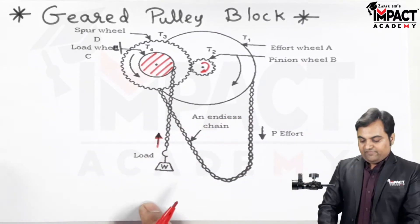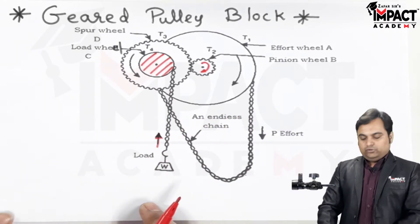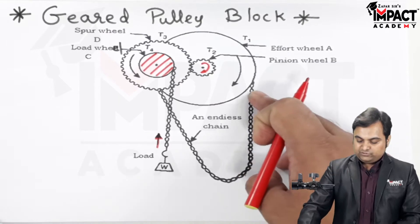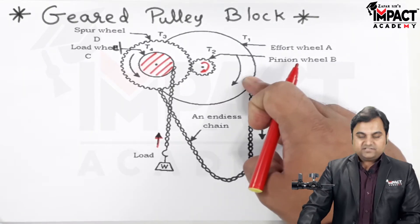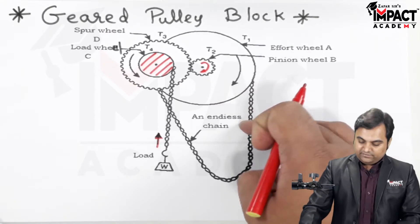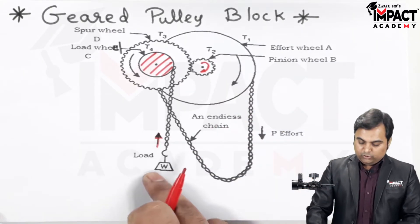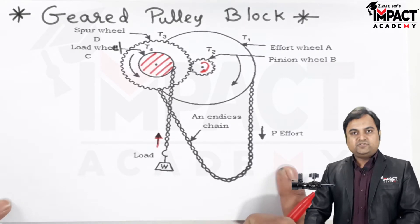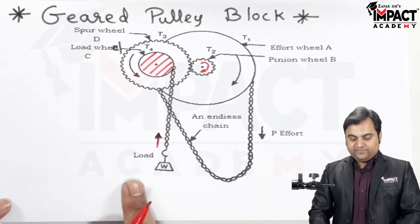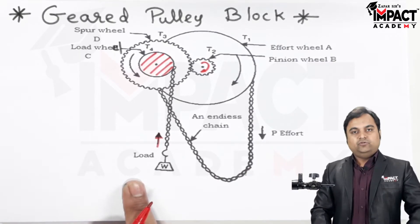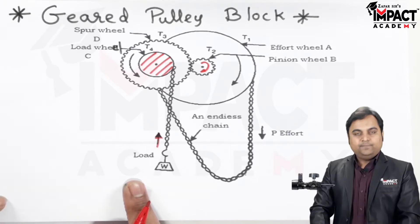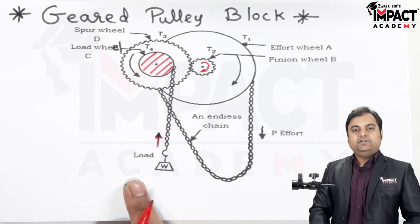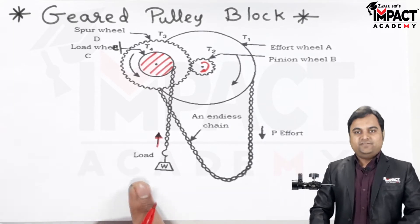If we want to lower the load, instead of pulling the chain we simply release the chain, and the load gets lowered. By applying a relatively small effort, a considerably large amount of load can be lifted with the help of a geared pulley block. The velocity ratio formula is given as follows.